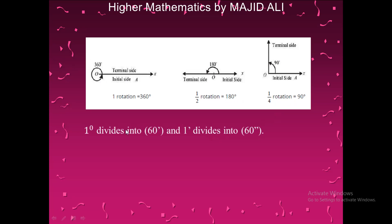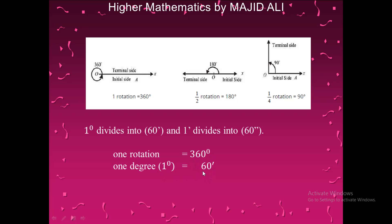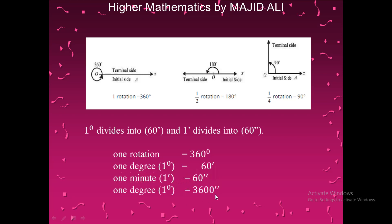We can also divide the degree into minutes and minutes into seconds. One rotation equals 360 degrees, one degree equals 60 minutes, and one minute equals 60 seconds. This is analogous to the clock system where one hour equals 60 minutes and one minute equals 60 seconds. Therefore, one degree equals 3600 seconds.